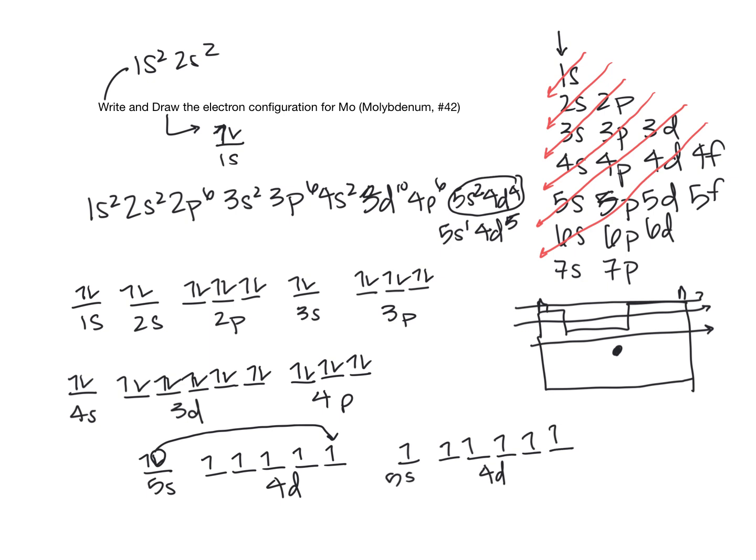So what this says is instead of having a full s orbital and 4 out of 5 d orbitals, we're going to promote an electron from the 5s. So this is not a rule follower. There are several of them. They tend to have both 4, 8, or 9 in the d orbitals. So you can look at the periodic table to figure those out.